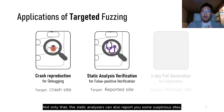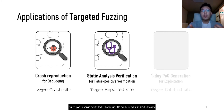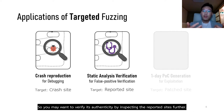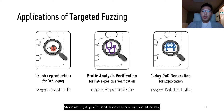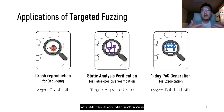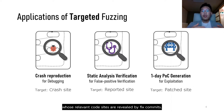Not only that, static analysis can also report suspicious sites, but you cannot trust those reports right away because they are notorious for false positives. So you may want to verify their authenticity by inspecting the reported site further. Meanwhile, even if you are not a developer but an attacker, you can still encounter such a case when you want to exploit a vulnerability whose relevant code sites are revealed by fix commits.